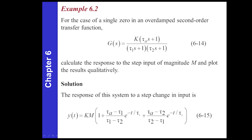The solution is given in equation 615, and you see tau a was in the numerator, and then tau one and tau two are here as well. You have these ratios with exponential terms. One of these ratios can be negative and the other positive depending on the magnitude of tau a and whether it's positive or negative.